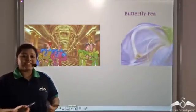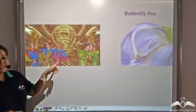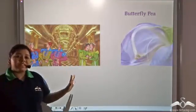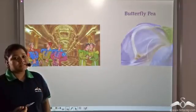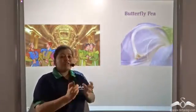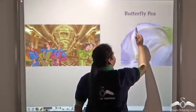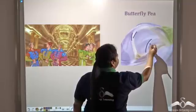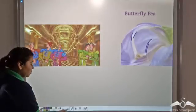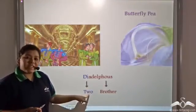Now think of this situation: the king has two queens — queen one has three sons and queen two has two sons. These stepbrothers stay separately and don't talk to each other. Similarly, there are flowers like butterfly pea in which there are two groups of stamens. This is one group of stamens and this is another group. This arrangement of stamens is known as diadelphous, where 'di' means two and 'adelphous' means brother.